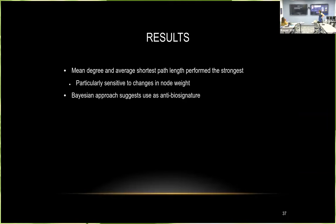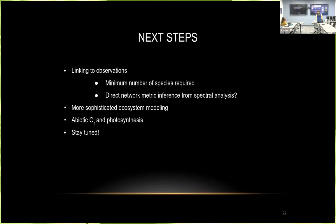Mean degree and average shortest path length in all the cases we looked at performed the strongest in terms of distinguishing between planets with life and without, or planets with technology and without. My suspicion is that these metrics are particularly sensitive to changes in edge weight — basically how much flux is going through reactions — which likely has to do with the fact that when you introduce life, you get some species that are very reactive, participate in a lot of reactions, and produce a lot of products.